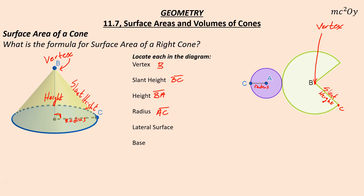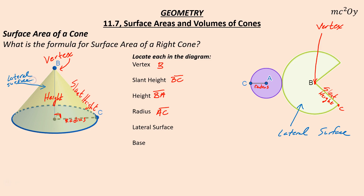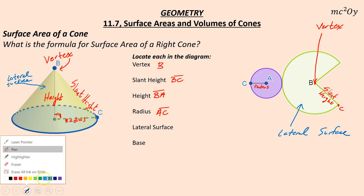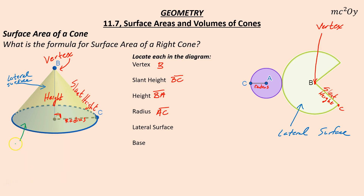And then the lateral surface. The lateral surface is a little easier to see on our two-dimensional where we have the lateral surface. On our three-dimensional, the lateral surface is this kind of wrapping that does not include the circle on the bottom. And then finally, the base — the base is the bottom circle. So circle A is our base.